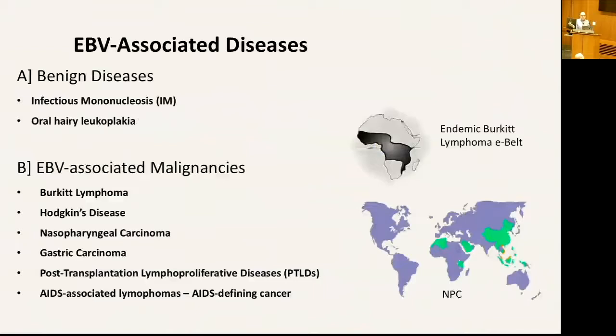EBV is associated with several diseases. It is the etiological agent for infectious mononucleosis and oral hairy leukoplakia, but it's also associated with several lymphomas and carcinomas, such as Burkitt lymphoma, Hodgkin's disease, nasopharyngeal carcinoma, gastric carcinoma, PTLD, and AIDS-associated lymphoma. Some of these, such as Burkitt lymphoma and nasopharyngeal carcinoma, have an interesting geographical distribution that we still don't fully understand.